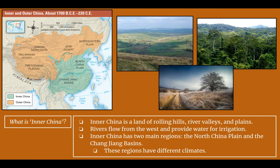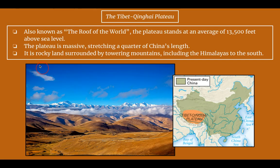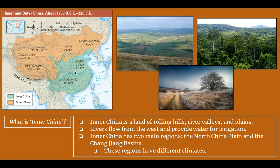Inner China is a land of rolling hills, river valleys, and plains — a place good for farming. Rivers flow from the west and provide water for irrigation. Inner China has two main regions: the North China plain, and the Changjiang basins. These regions have different climates and are best suited for different types of crops — rolling hills good for grazing, river valleys — but generally inner China is good for farming.